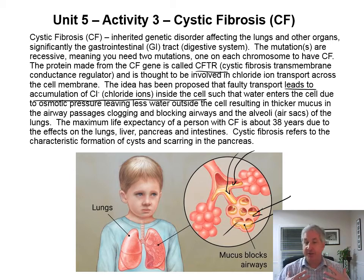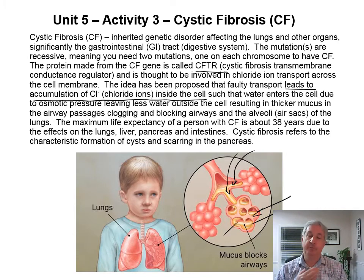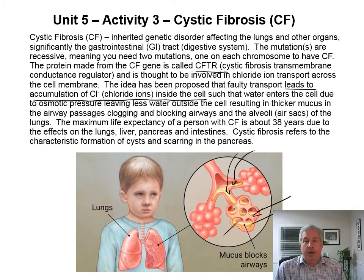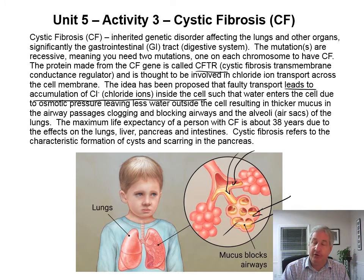To loosen up the mucus, one of the treatments involves having somebody pounding on the chest and back for quite a long time. For CF, maximum life expectancy is about 38 years due to effects on the lungs, liver, pancreas, and intestines.